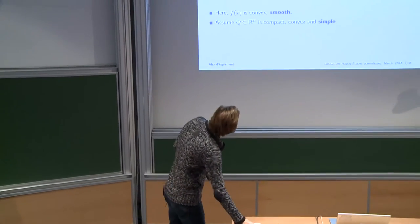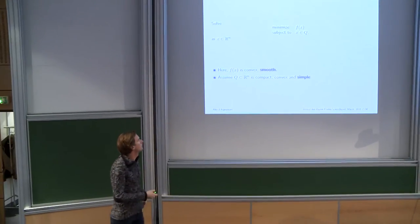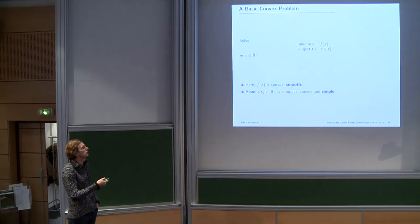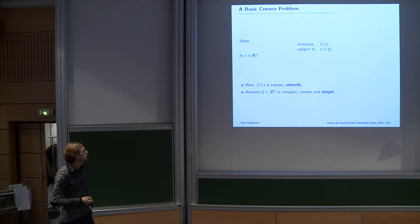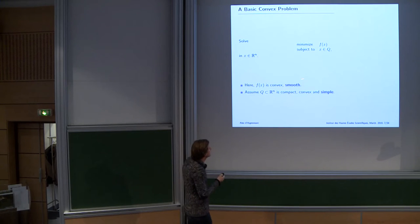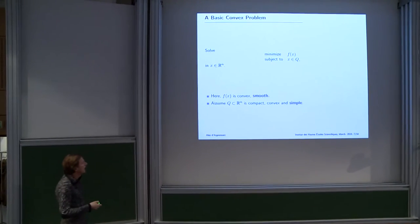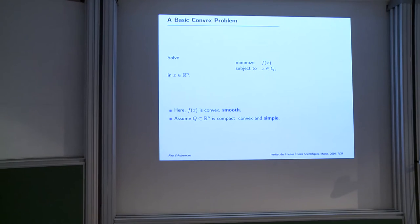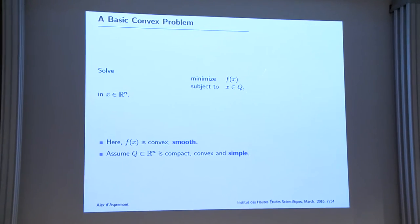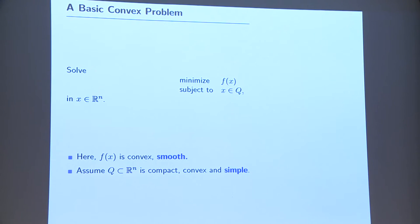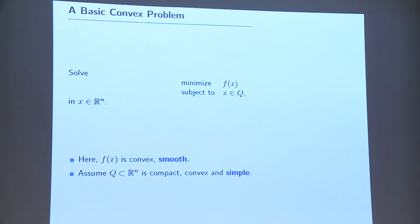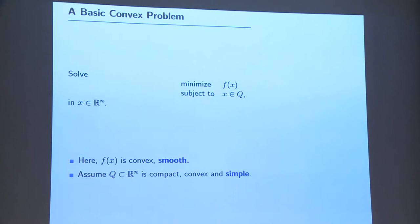We're going to consider a very simple generic optimization problem: you minimize a convex function f over a simple compact convex set Q. We assume f is convex and smooth, and Q is compact, convex, and simple. If the set over which we optimize is not too big, we have a complete theory for this problem.